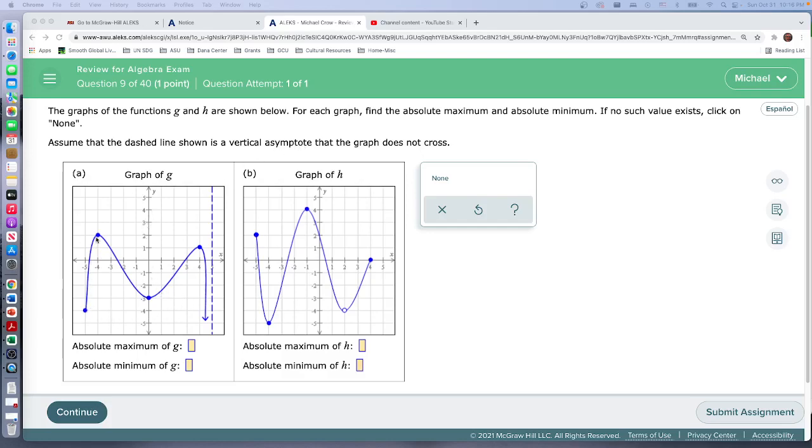For this first graph, we're looking for the absolute maximum of G. They didn't say 'absolute maximum value,' but that's really what they're talking about. They're not looking for the x-value or location—if they wanted that, they would ask where is the maximum.